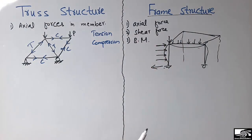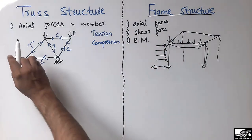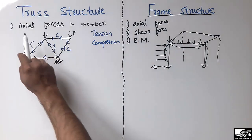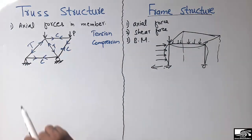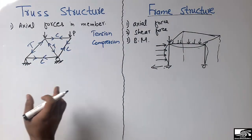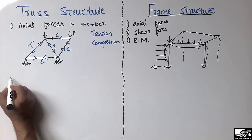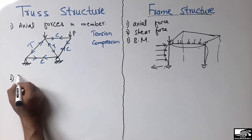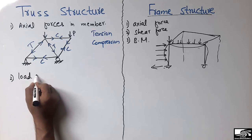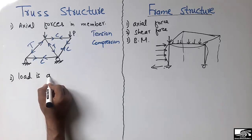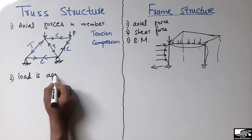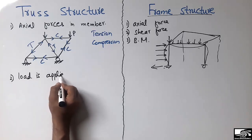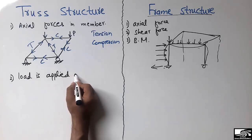So the main difference is that we have three different types of member forces in the frame structure, while we have only one — axial force — in the truss member. The second main difference is that in the truss, the load is applied only at joints.